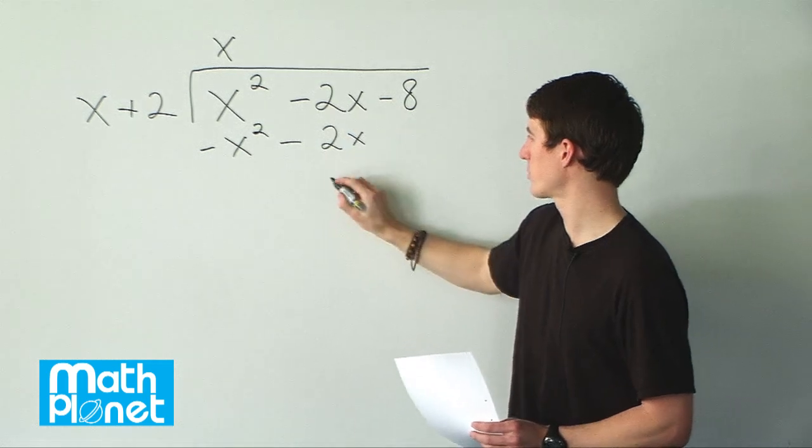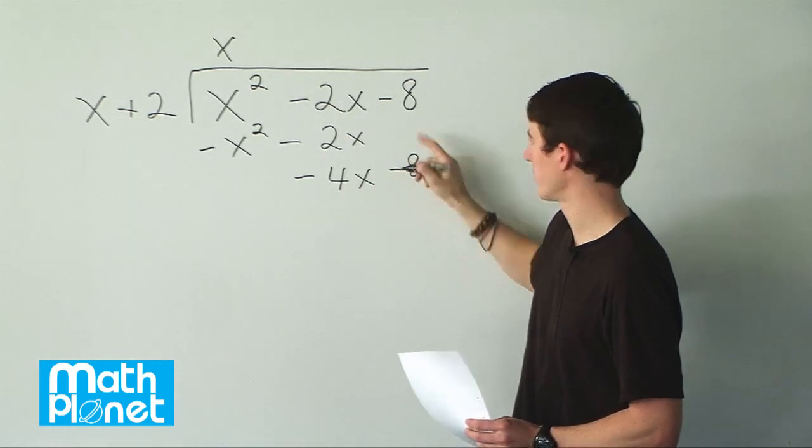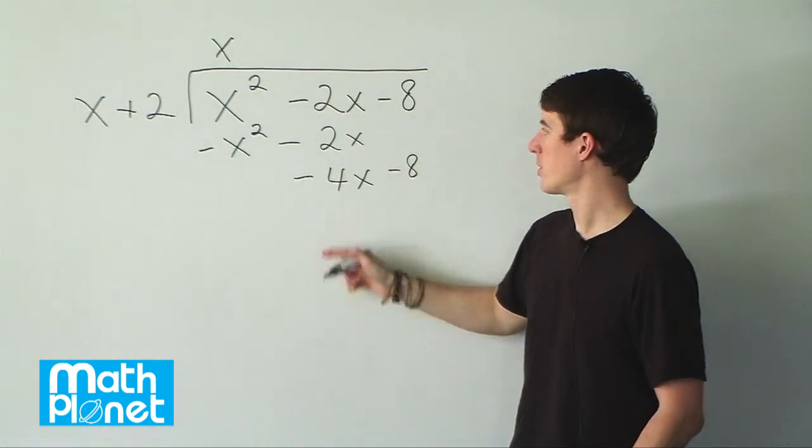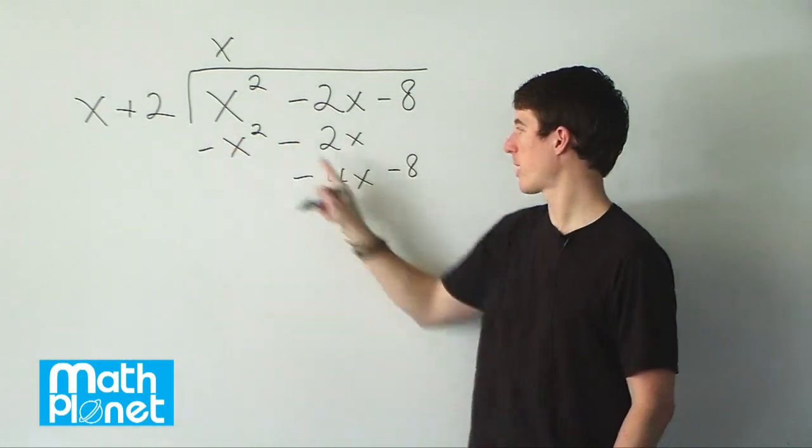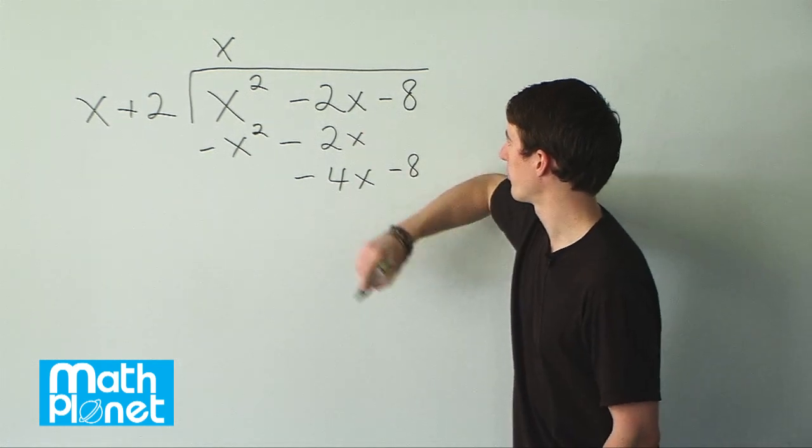Negative 2x minus 2x gives us negative 4x, and we still have this negative 8 here. So now we start again. What can we multiply this x by to eliminate this negative 4x? Well, of course it's just going to be negative 4.